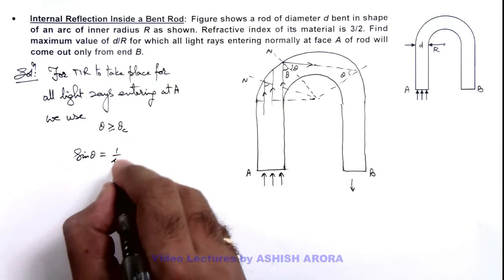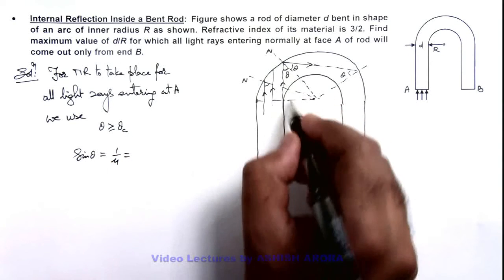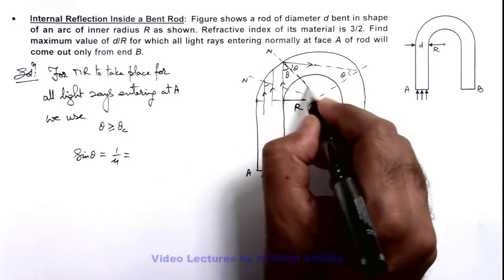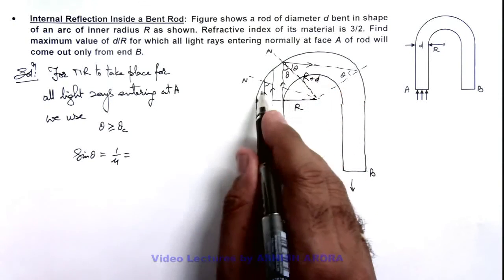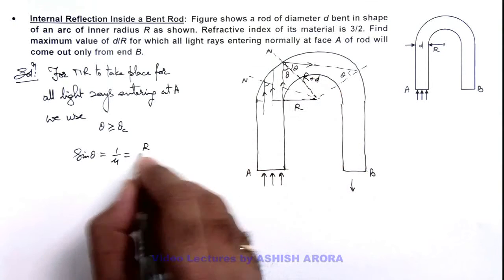This should be 1 by mu. And in this triangle we can see if this angle is r, this length will be r plus d. So in this situation the value of sine theta will be r by r plus d.